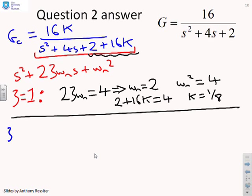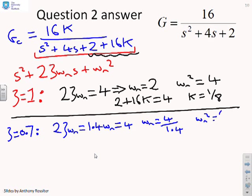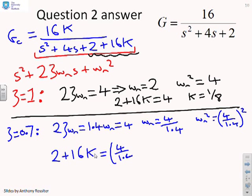What next? We said try zeta equals 0.7. So now I'm going to do 2 zeta omega n equals 1.4 omega n, because zeta is 0.7, equals 4. And that tells you that omega n equals 4 over 1.4, or omega n squared equals 4 over 1.4 squared. So now, again, I can separate the omega n squared term. So I get 2 plus 16K, that's omega n squared, equals 4 over 1.4 squared. And I can solve for this. And I'll let you do it yourself. But what you get is K equals 0.385.